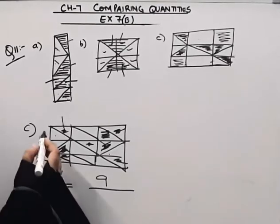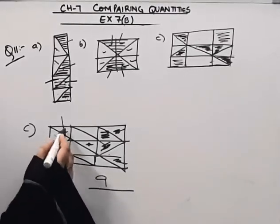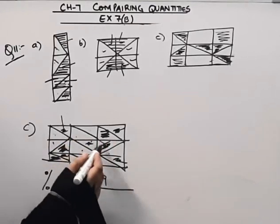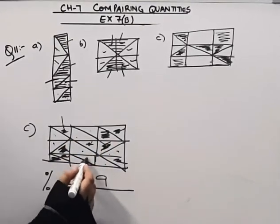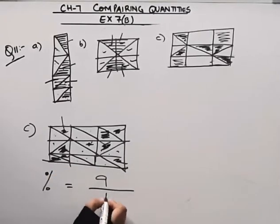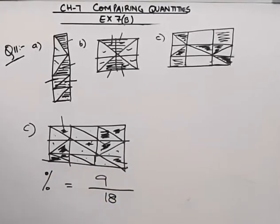Now we'll find out the total number of blocks. 1, 2, 3, 4, 5, 6, 7, 8, 9, 10, 11, 12, 13, 14, 15, 16, 17, 18. There are 18 blocks in total.